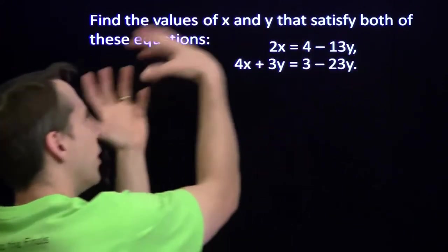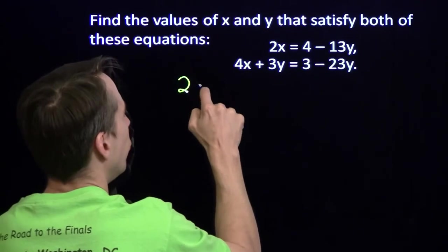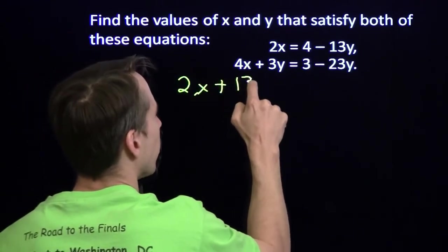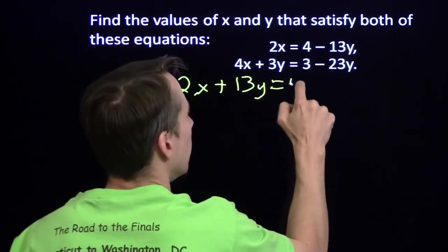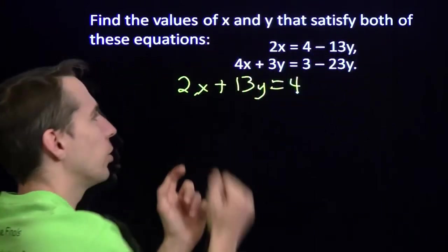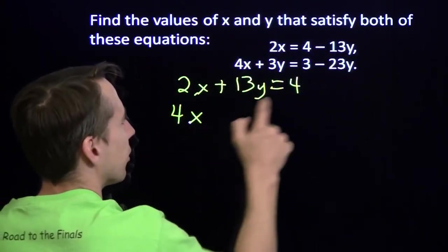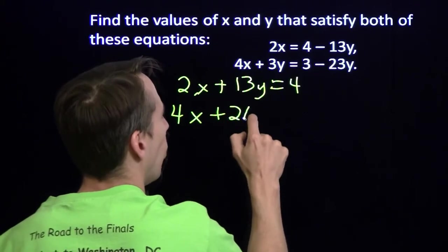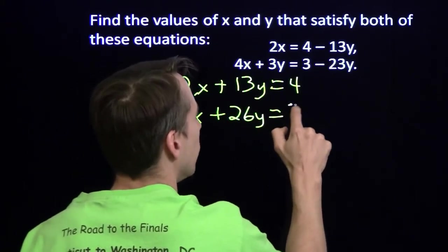Alright, we'll bring all the variables over to this side. We'll have 2x plus 13y equals 4. I'm going to add 23y to both sides. I'll have 4x plus 26y equals 3.